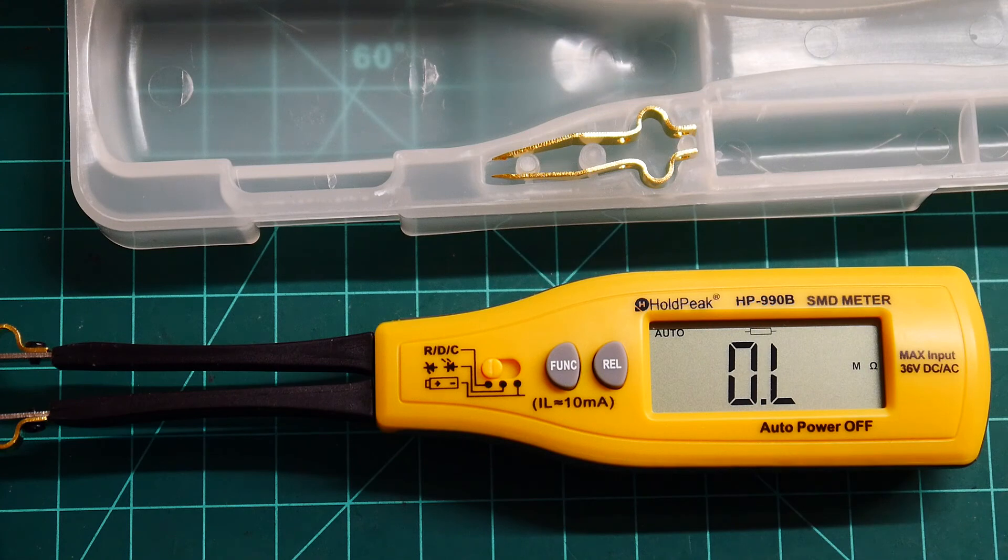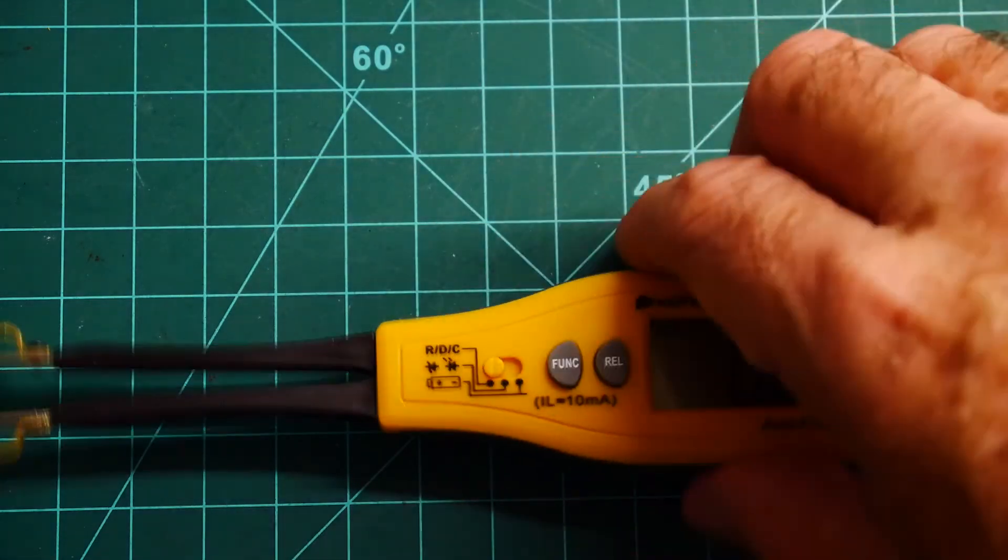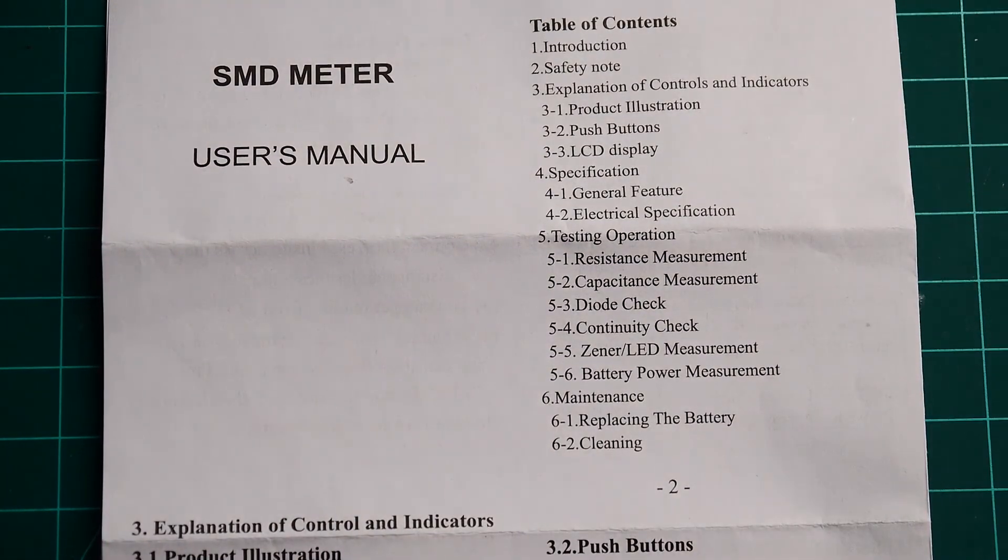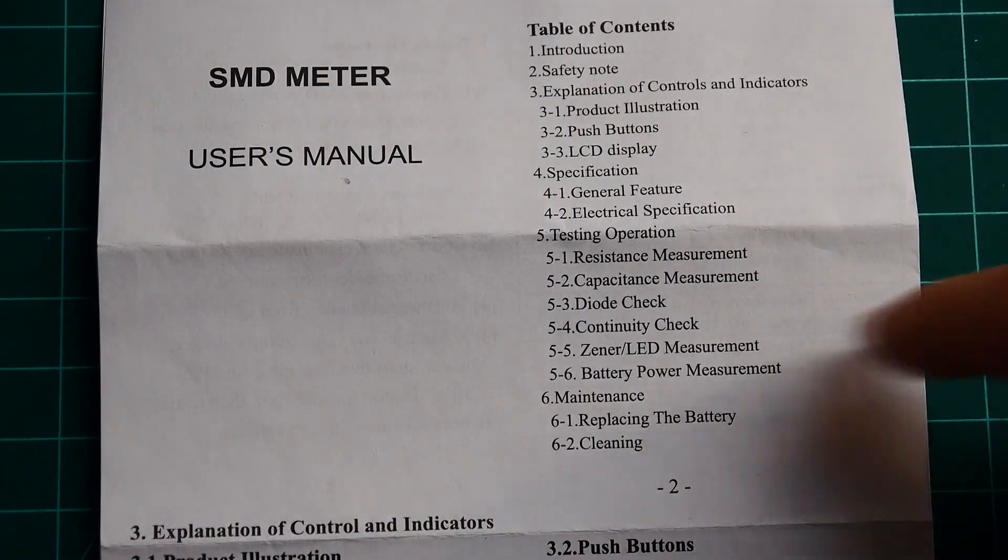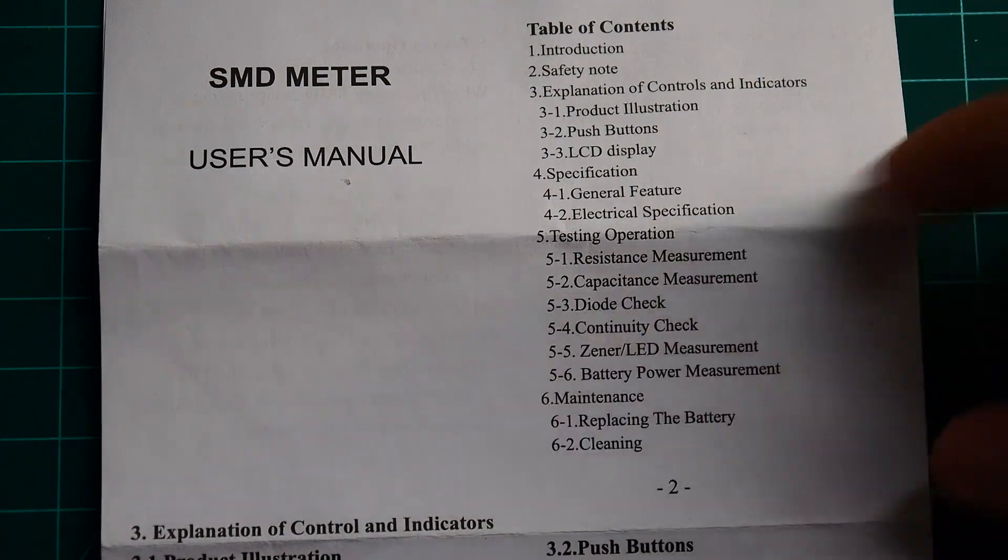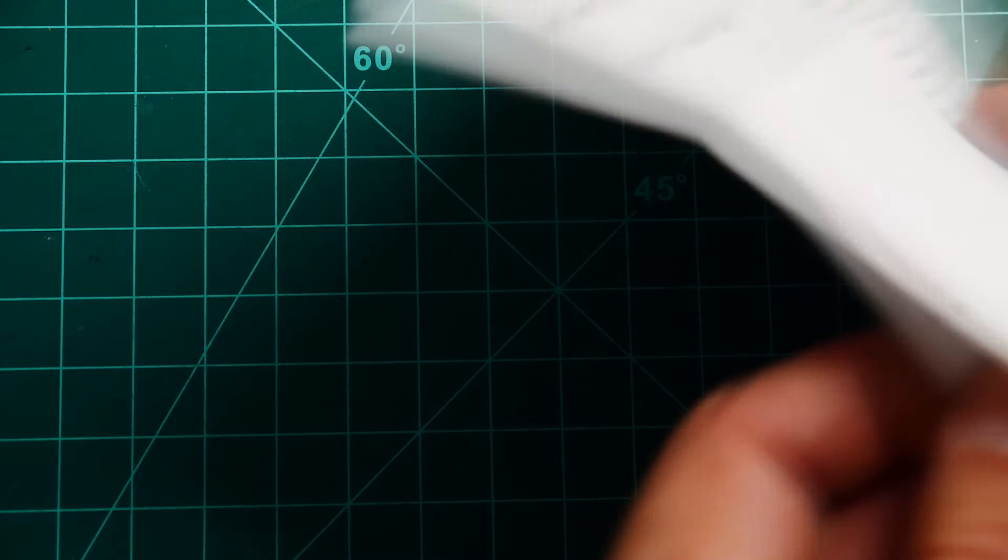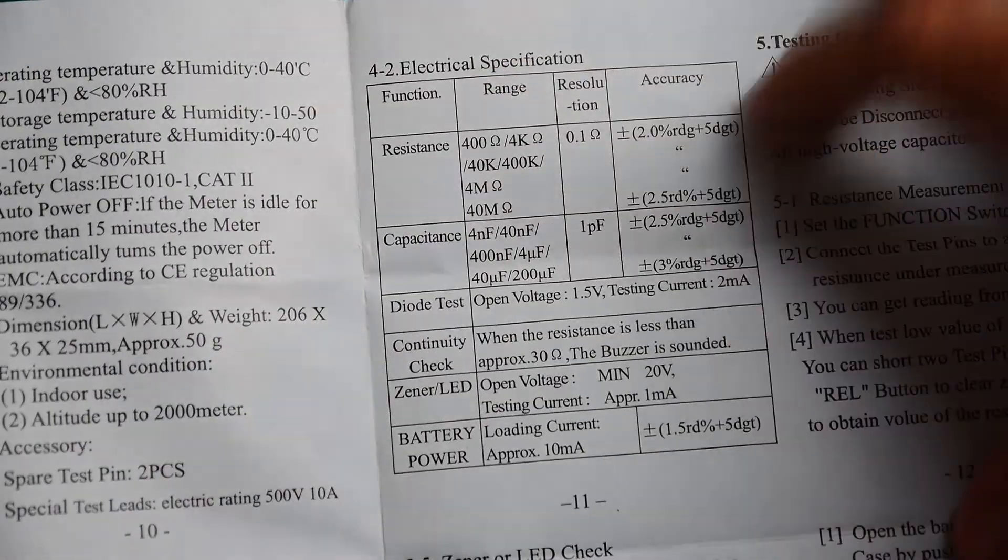So let's take a look at the manual and see what we can do with this thing. It does come with a manual. But it talks about the buttons and things. Let's see if we can look at the specifications. Here we go. Here are the specifications. This is probably more interesting.